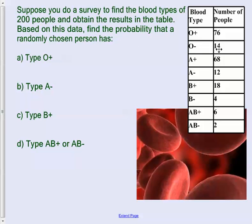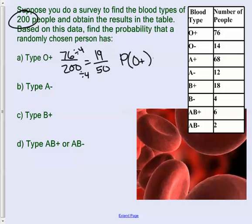Suppose you do a survey and we found all this information on the types of blood types of 200 people. These are the results that we obtained. Let's find the probability that a person has type O positive. So we have 76 out of 200, which would be 19 over 50 if we simplify it by dividing by four on both sides. You go ahead and try these next three. I'll be back in just a second to show you the answers.